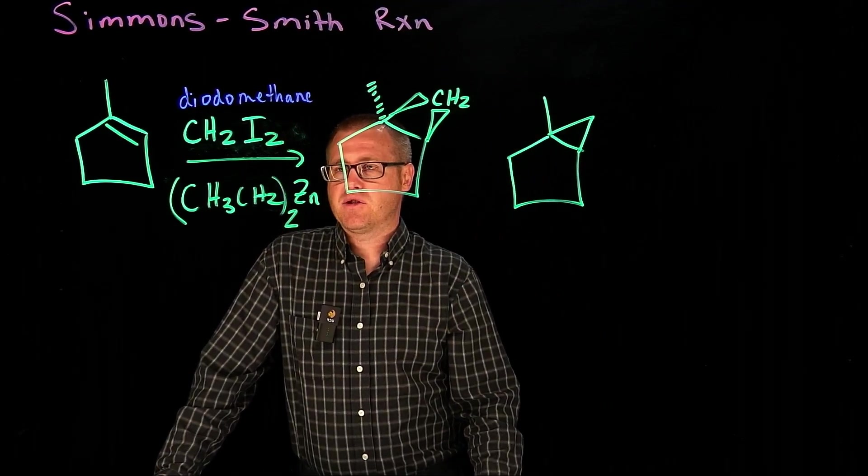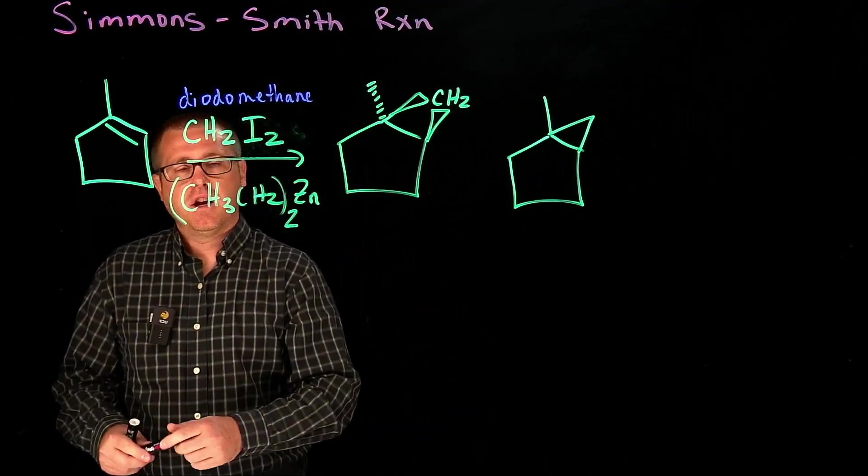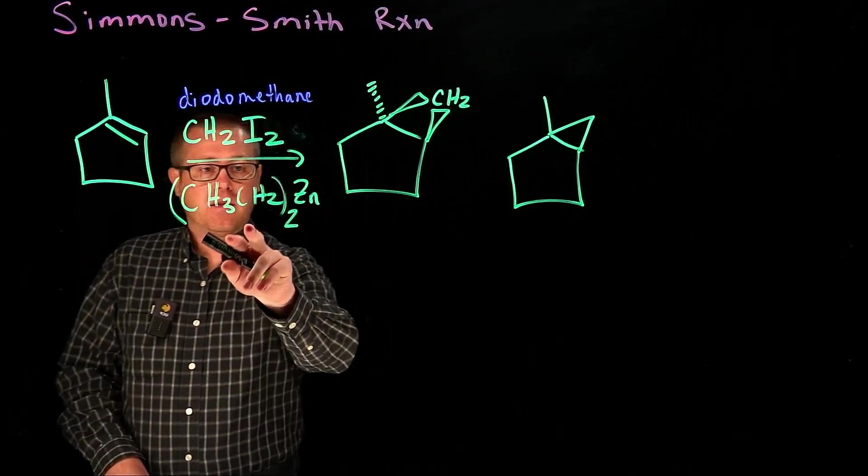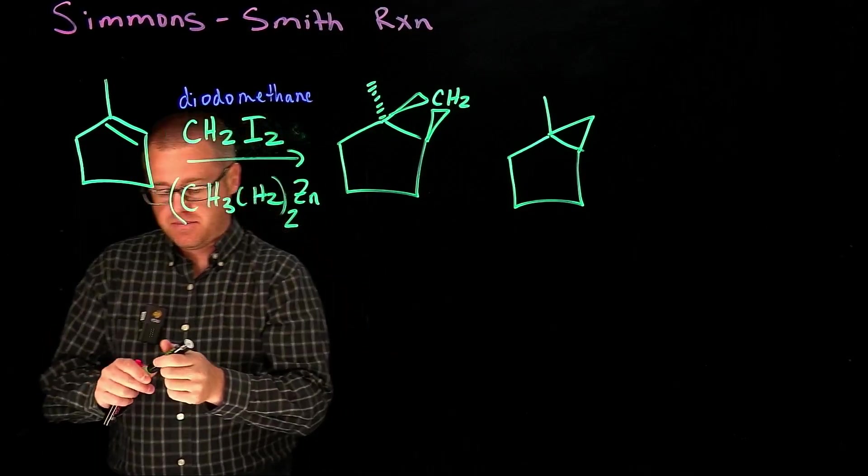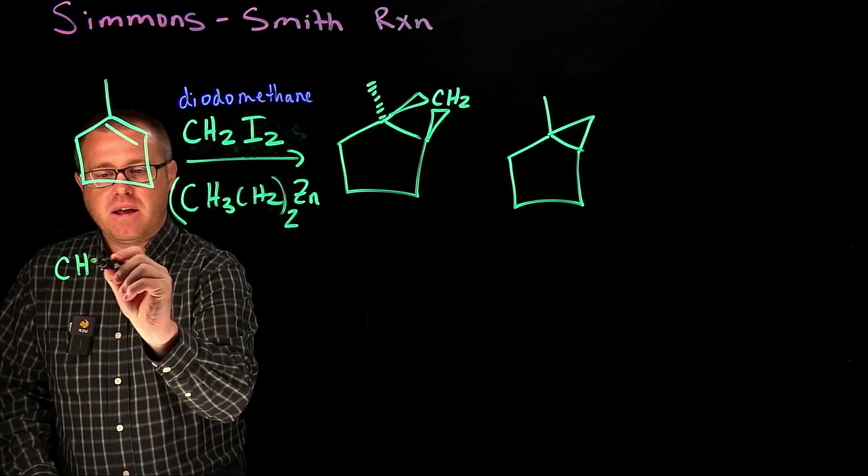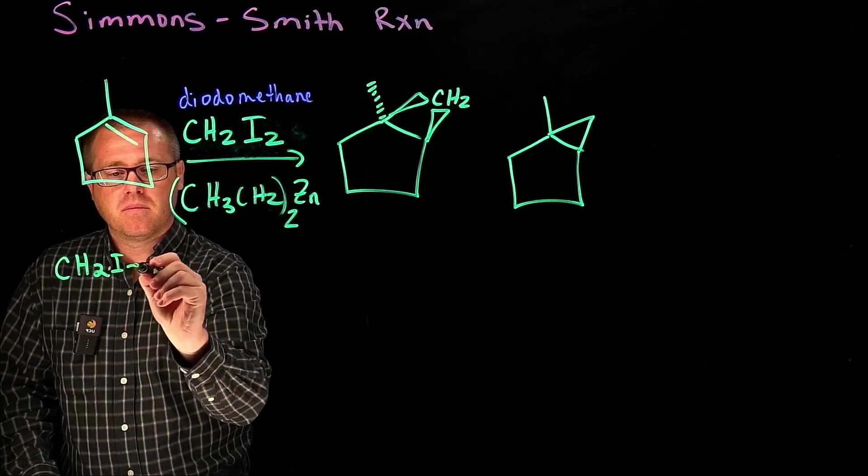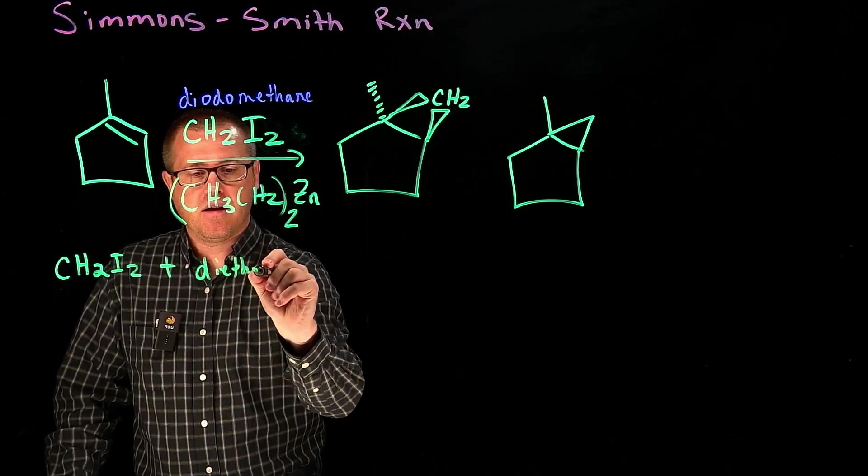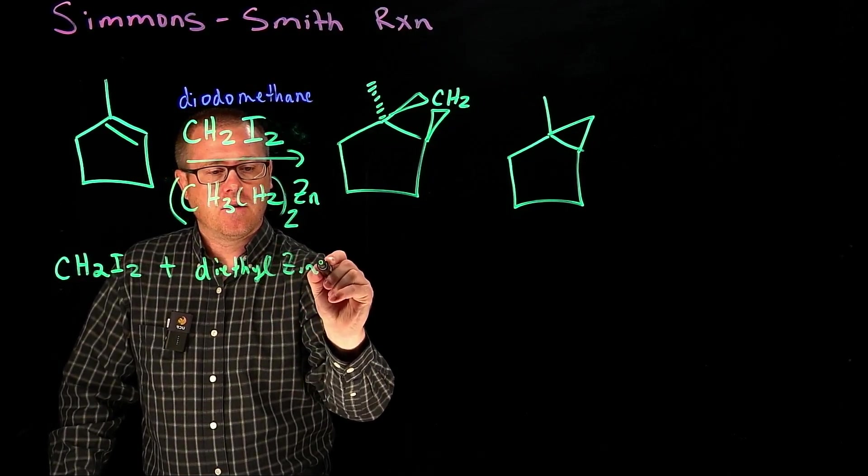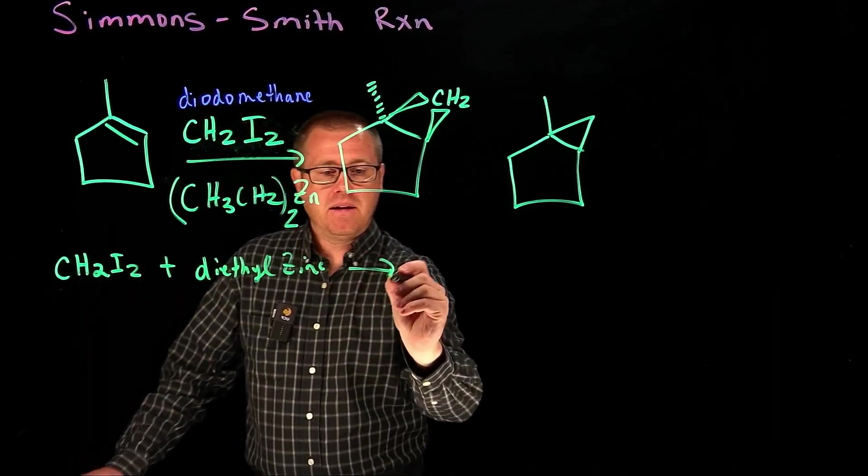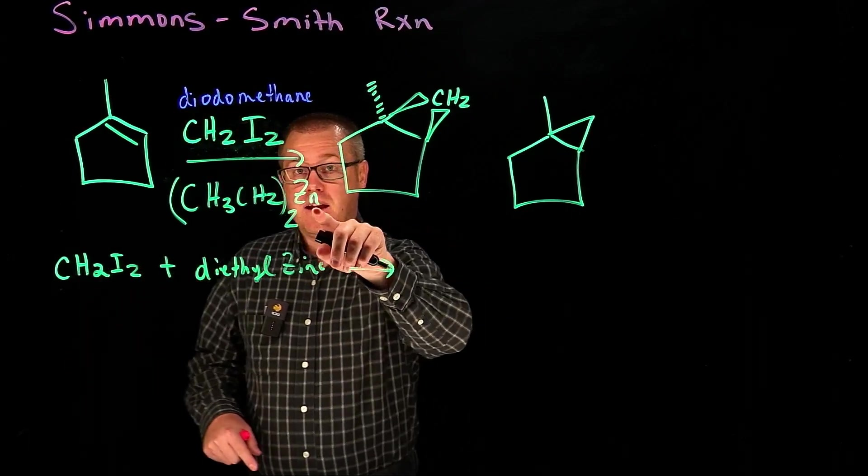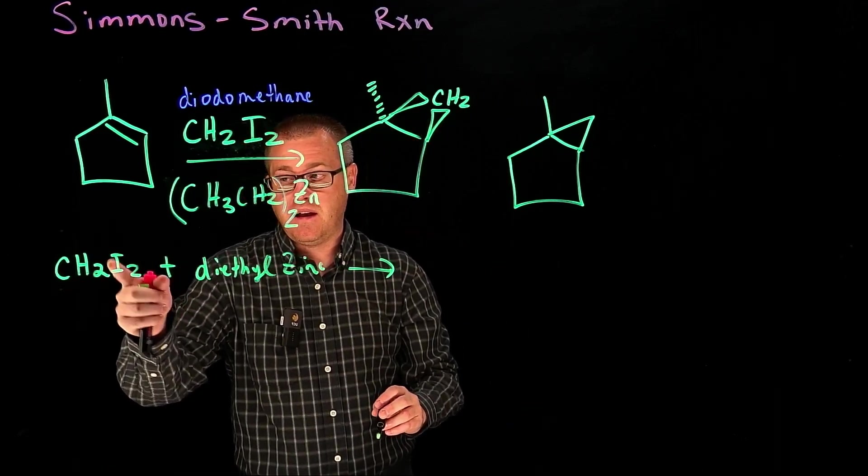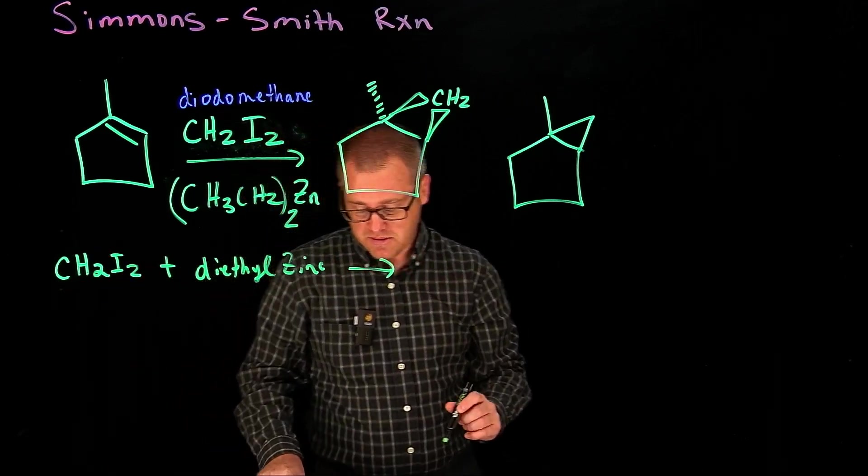Now the mechanism for this transformation is you're going to take your diodomethane and you're going to react it with the diethyl zinc species. What's going to happen is that the zinc is going to slip in and insert itself between the iodide and the carbon.